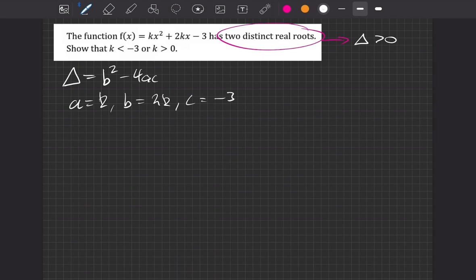So when we go to fill in our discriminant, it's going to be b squared, which is 2k squared, minus 4, times by a, which is k, times by c, which is minus 3.